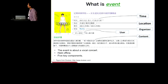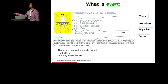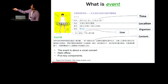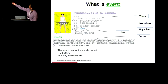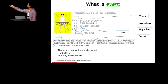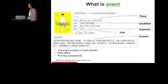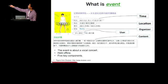Let me give you an example of the event. This is a figure extracted from Douban, a Chinese large community website. As we can see here, this event is about a music concert. It is organized by Momo, so we call it the organizer. Besides, the organizer should specify the starting time of the event, and the location where the event will be held. And finally, to make users better understand the event, the publisher should give some detailed introduction — we call this the content information of this event.